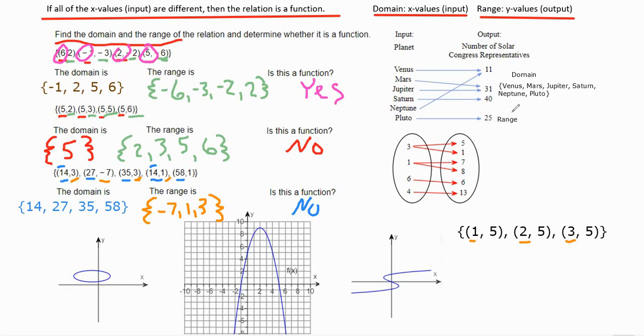And the output, which is the range, would be 11, 31, 40, and 25. And do note that we could list this in alphabetical order. That might be preferable. Let's go with 11, 25, 31, and 40.